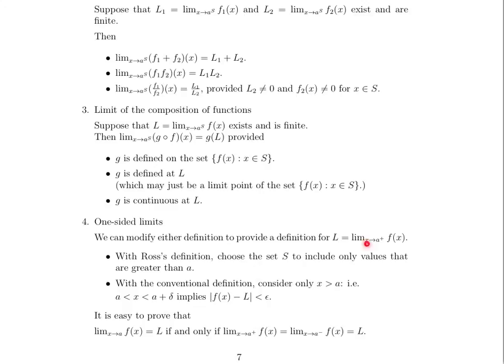we only want to include values that are greater than A in our set S. With the conventional definition, we just say consider only X greater than A. And so X is between A and A plus epsilon since it's approaching from the right. And that implies that the function value of X and L are within epsilon of each other.